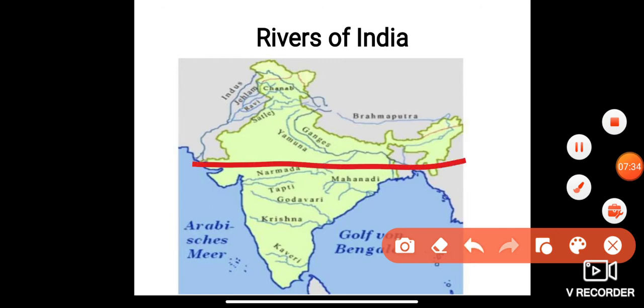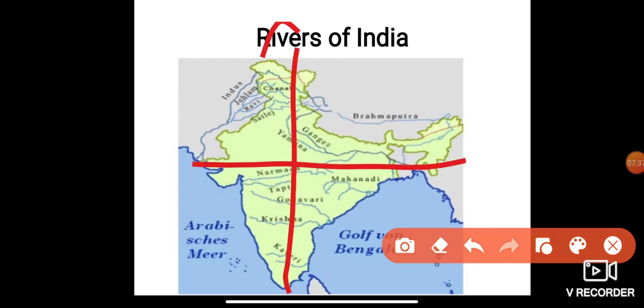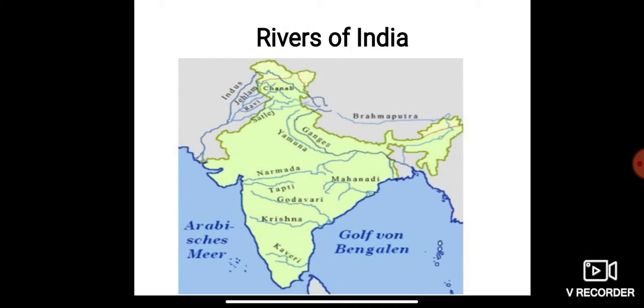India is divided into north, east, west, and south — I hope you know the directions. As you have indicated rivers in the south and in the north, accordingly the question is asking based on that.